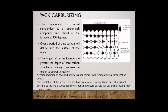Because of pack carburizing, an interstitial solid solution is produced. The carbon atoms are placed in between the iron atoms, so interstitial solid solution is produced. Because of this heat treatment, grain refinement is produced, so the component gets case hardened, and we can use these case hardened materials for many machining processes.